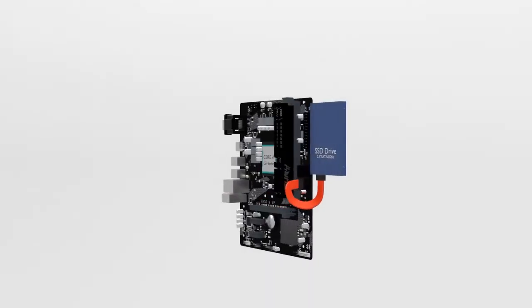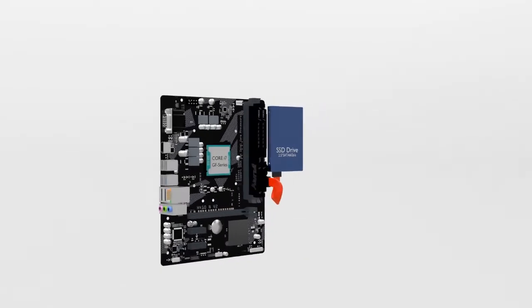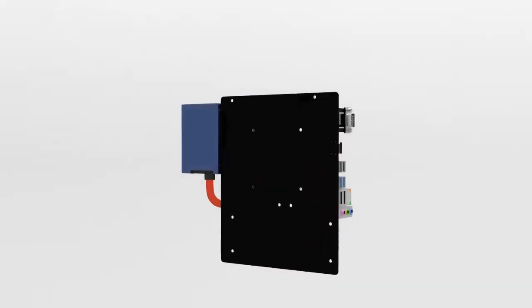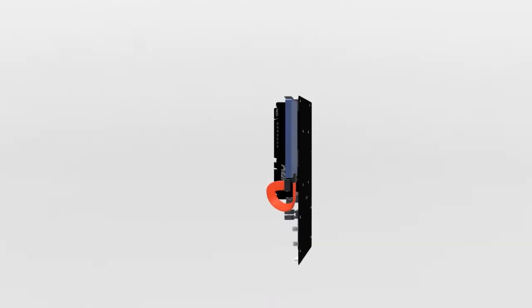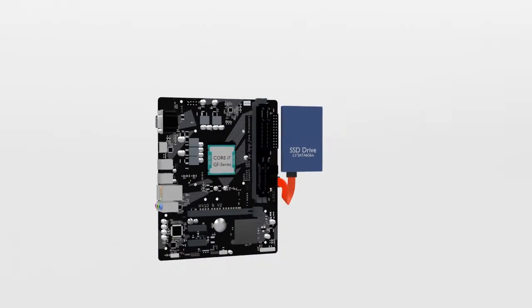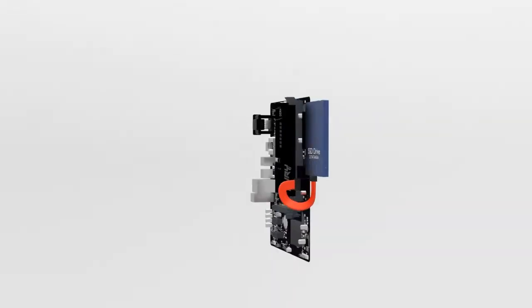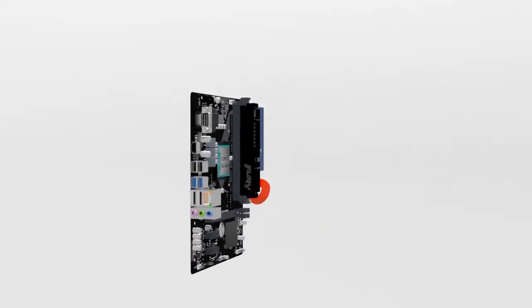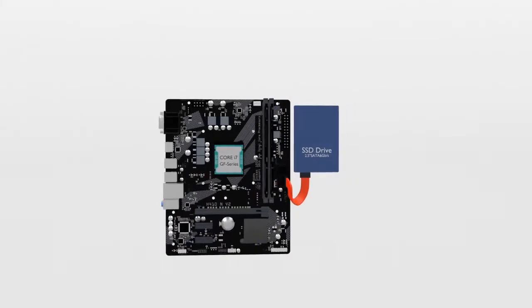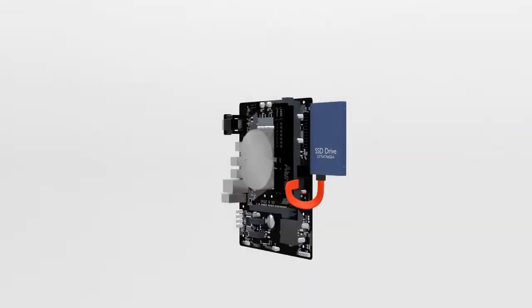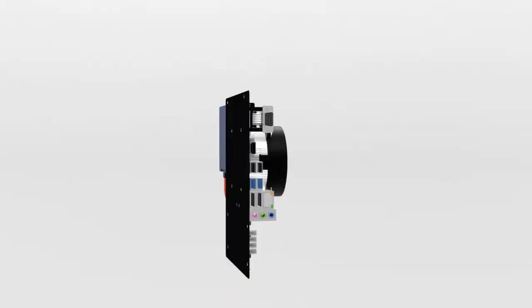Just like you feel your brain gets very hot when doing lots of maths questions, a processor gets very hot when doing all those billions of calculations a second. Just like you, a processor does not work very well when it gets too hot. So sometimes we need to help it keep cool by placing a large piece of metal on top called a heat sink to help drain away the heat. A fan is put on top to blow cool air through the gaps in the heat sink.